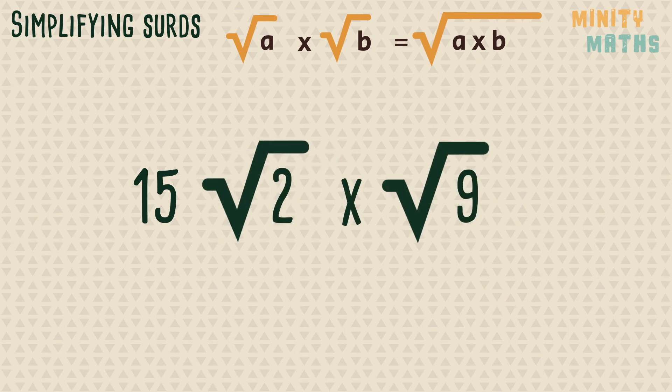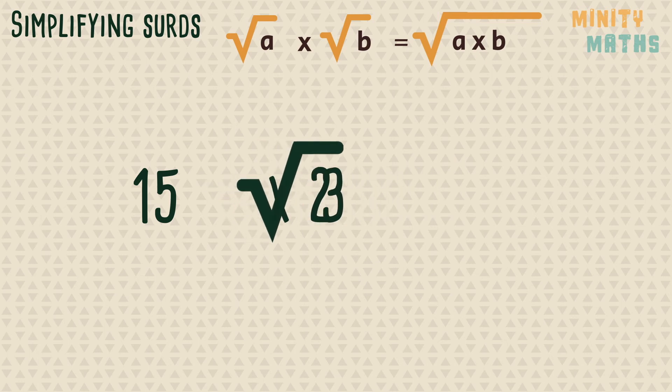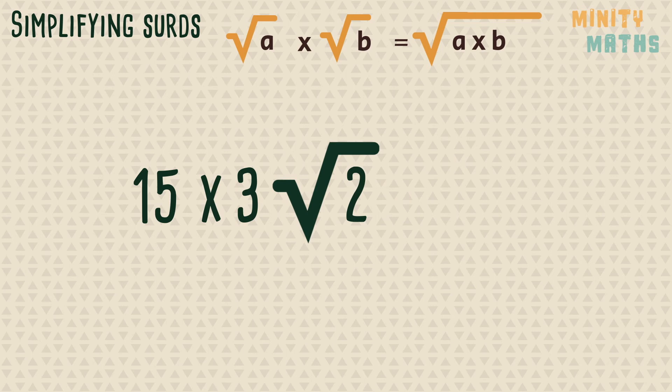Now we can calculate the square root of 9, as this is not a surd. Lastly, we multiply the whole numbers together again, and as the number under the root sign has no square factors greater than 1, this is now in its simplest form.